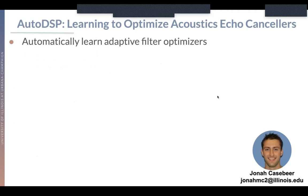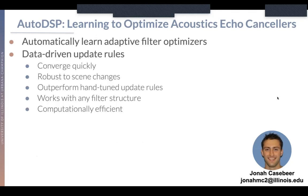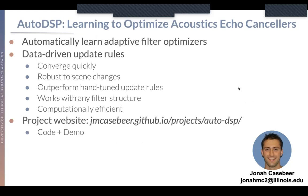In effect, what we're proposing is a way to automatically learn adaptive filter optimizers. We're able to build data-driven update rules which converge quickly, are robust to scene changes unseen in training, outperform hand-tuned update rules, work with near-arbitrary filter structures, and are extremely computationally efficient. You can find our project website at the URL shown, where we have our code along with a set of demos. Thank you, and have a good one.